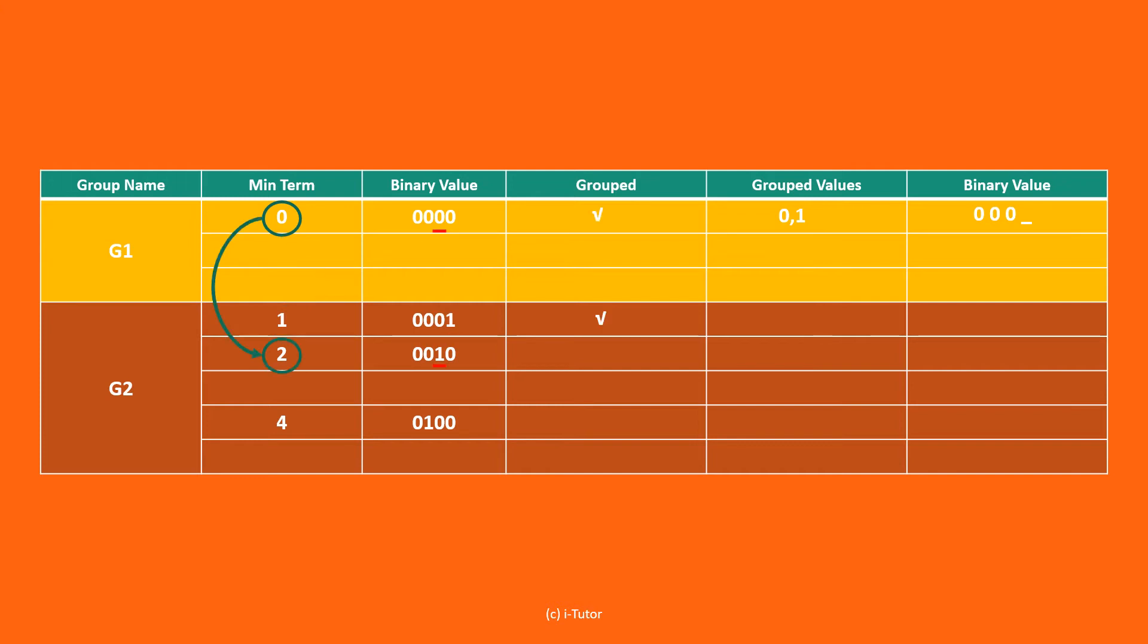Comparing 0 with 2, we can see the second last bit has the difference. Thus the grouping can be done as 0,2 with binary value 00 underscore 0. Comparing 0 with 4, we can see the second bit has the difference. Thus the grouping can be done as 0,4 with binary value 0 underscore 00.